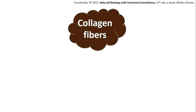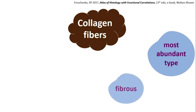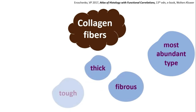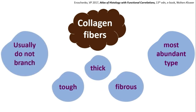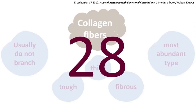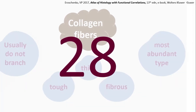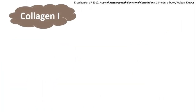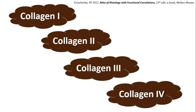Collagen fibers are the most abundant fibers, composed of fibrous, thick, tough proteins that usually do not branch. There are at least 28 different types of genetically distinct collagens found in vertebrates. Today, we will discuss the most frequently recognized collagens in histological slides: Collagen 1, 2, 3, and 4.